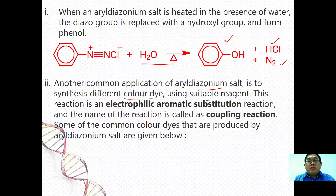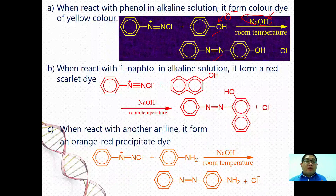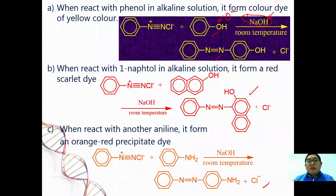Another common application of aryl diazonium salt is to synthesize different color dyes using suitable reagents. This reaction is a type of electrophilic aromatic substitution called a coupling reaction. When the diazonium salt reacts with phenol under alkaline conditions, you form an azo dye which is yellow — the purpose of sodium hydroxide is to form sodium phenoxide (O−) to make electrophilic aromatic substitution easier. When reacted with 1-naphthol, you form a red scarlet dye, and when reacted with aniline, you form an orange precipitate. Those are all the chemical properties of alkylamines and arylamines covered in this video.